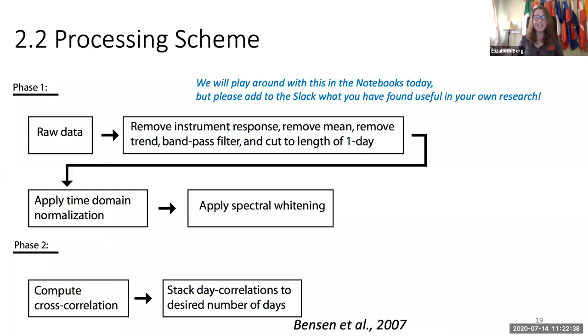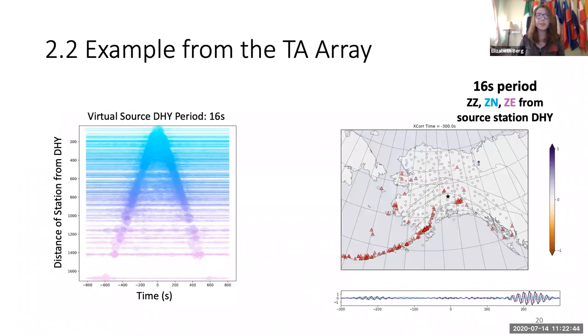This is a quick example from the transportable array in Alaska. This is band passed around 16 seconds. This is from source station DHY, shown as a star here. This is just a record section sorted by distance of the station from DHY. You can see this really beautiful signal moving out corresponding to the surface waves. This is the ZZ component.